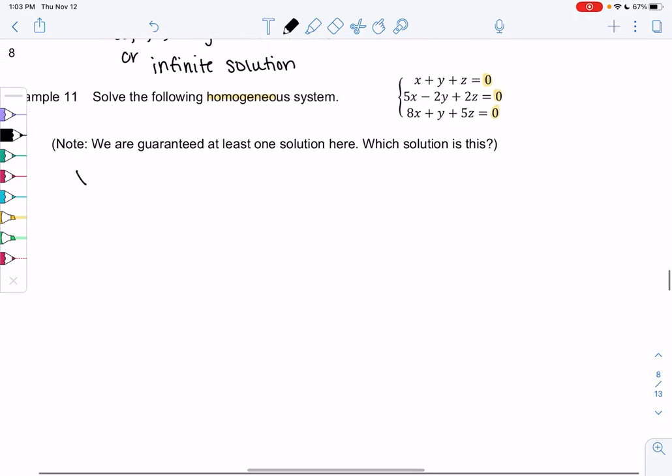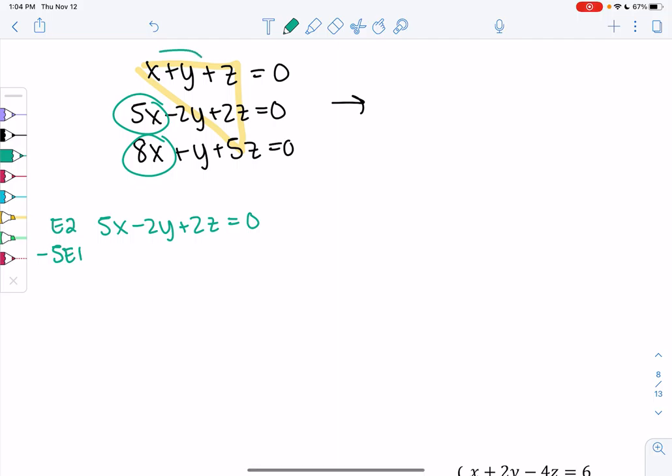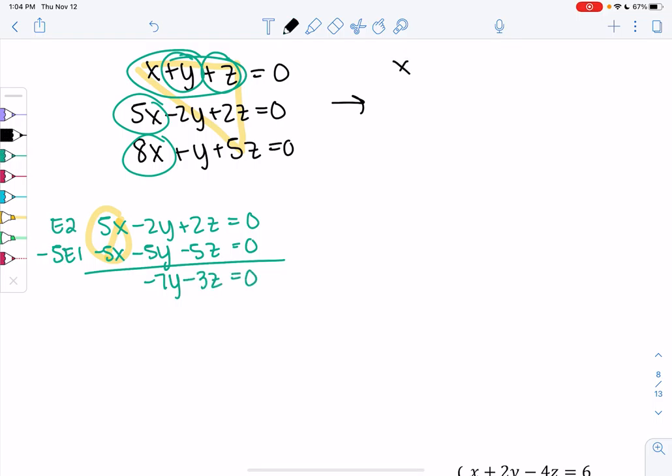I'm going to eliminate x's first. In equation 2, 5x minus 2y plus 2z equals zero, I'll subtract the first equation times 5. E2 minus 5E1. Negative 5 times x, negative 5y, negative 5z equals zero. The x's eliminate, so we get negative 7y minus 3z equals zero. E1 is x plus y plus z equals zero, and my new equation 2 is negative 7y minus 3z equals zero.